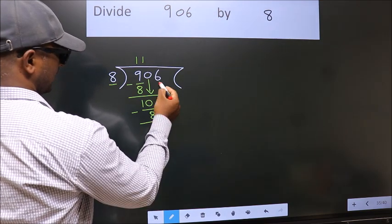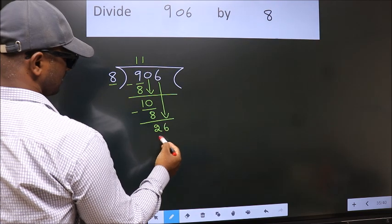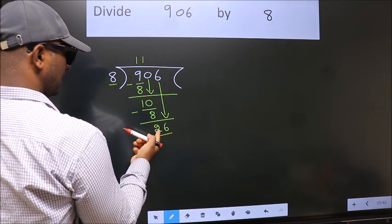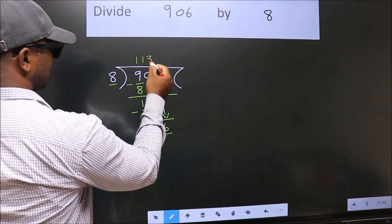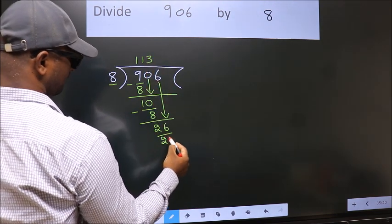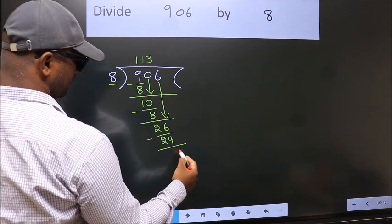After this, bring down the beside number. So, 6 down. So, 26. A number close to 26 in 8 table is 8 threes, 24. Now, we subtract. We get 2.